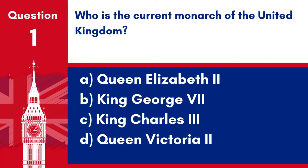Question 1. Who is the current monarch of the United Kingdom? A. Queen Elizabeth II. B. King George VII. C. King Charles III. D. Queen Victoria II. Answer: C. King Charles III.